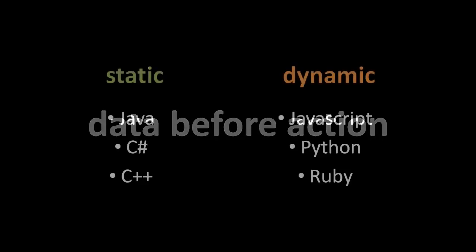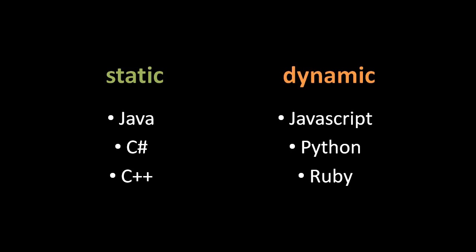Many popular programming languages today are considered object-oriented languages because they include features which assist or even encourage the programmer to program in an object-oriented style. Take, for example, these six popular current languages, three of which are statically typed — Java, C#, and C++ — and three of which are dynamically typed — JavaScript, Python, and Ruby.